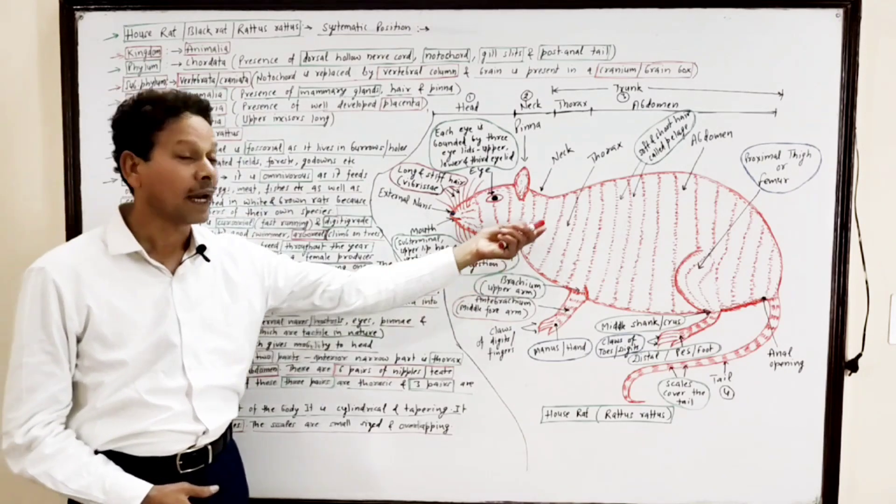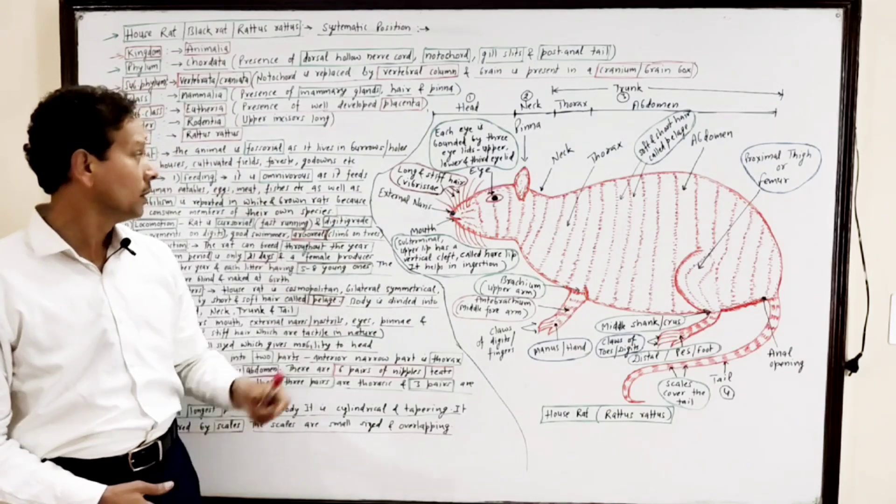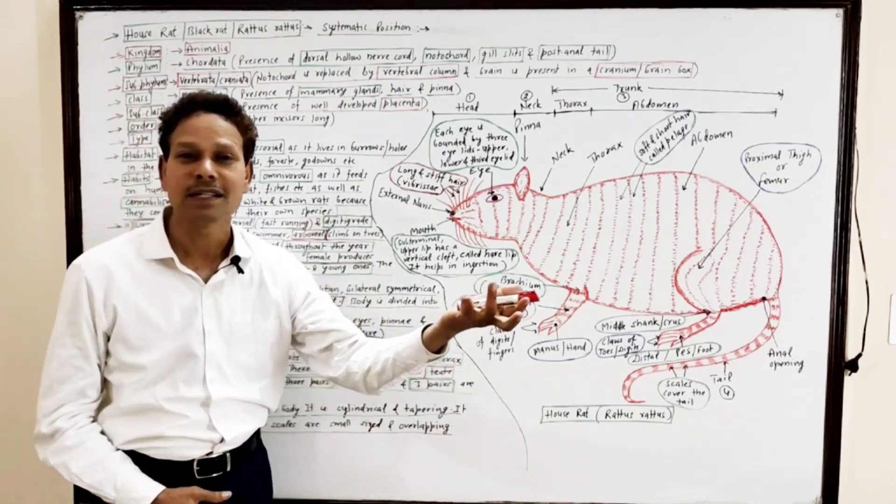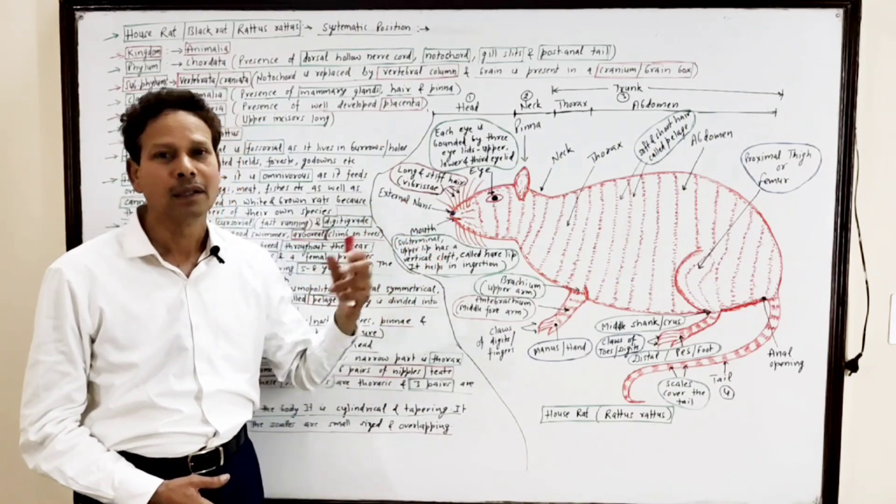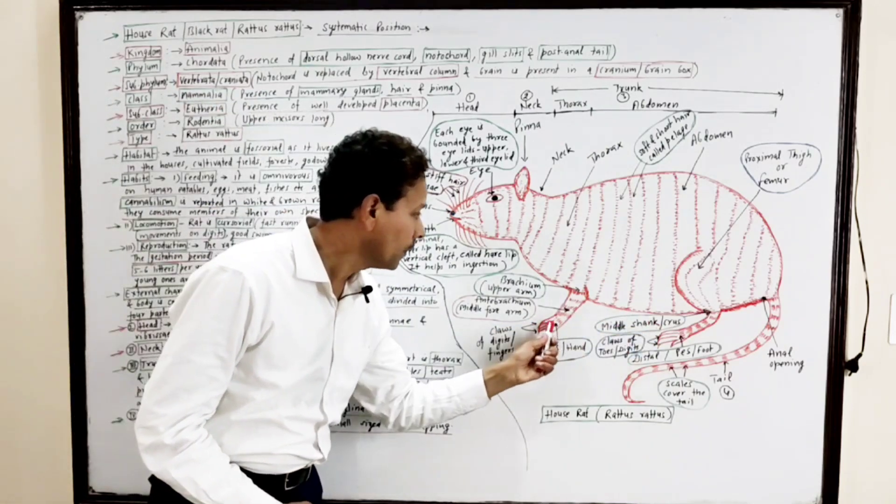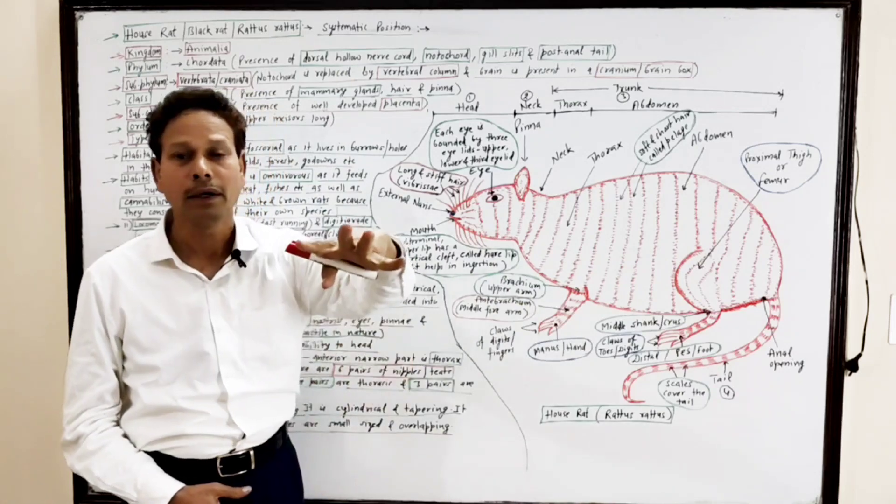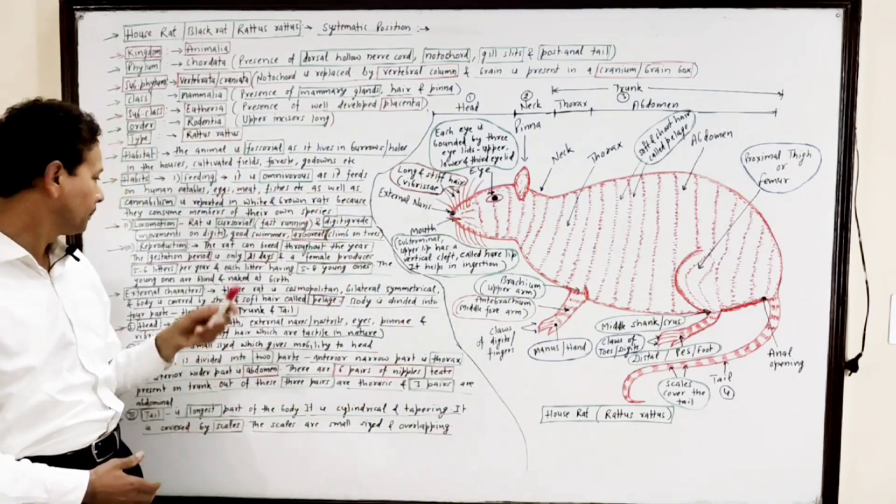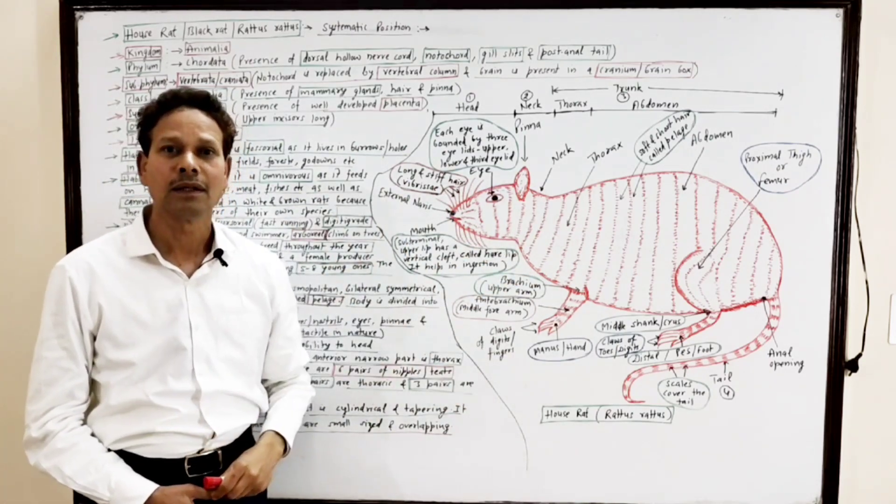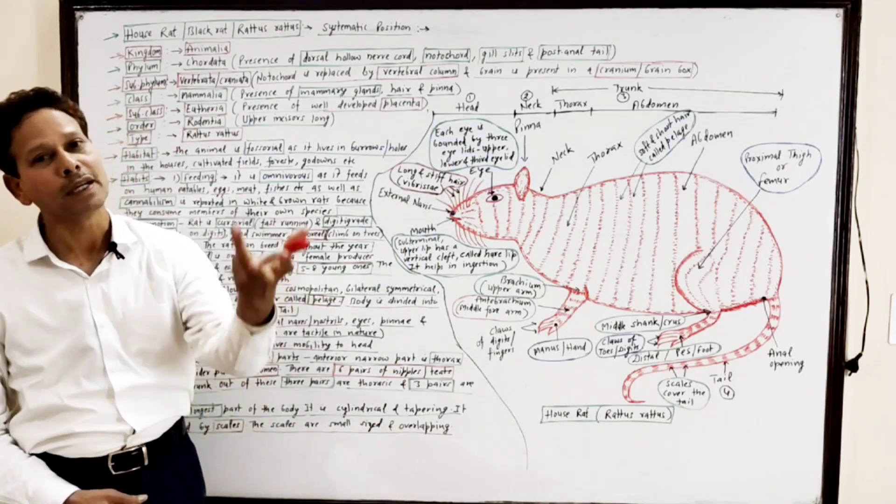Locomotion: The rat is cursorial, meaning it is a fast-running animal. It lives in burrows, so it is fossorial. But it is cursorial because the animal is fast running. It is digitigrade, meaning the animal walks and runs on digits. As well as it swims in water. The animal climbs on trees, so it is arboreal. And the house rat also climbs the wall, so it is scansorial.